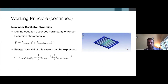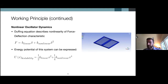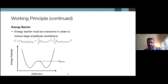We can describe a buckled beam or an array of buckled beams by the Duffing equation. This relates both a linear and a nonlinear term of stiffness to describe the relationship between force and deflection. From this stiffness force-deflection relationship, we can derive the energy potential of the system — which has a linear and a nonlinear stiffness term relating deflection to potential. When we plot this, it really visualizes the physics behind the buckled beam energy harvester: we plot the energy potential with respect to deflection.